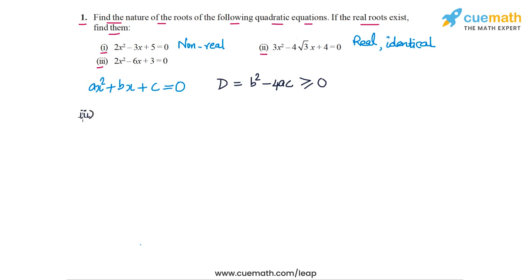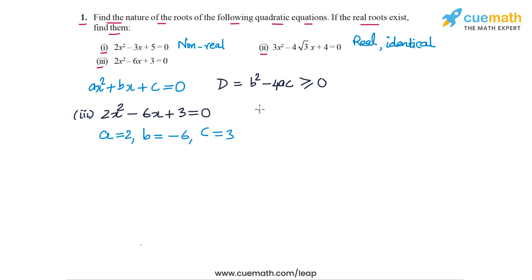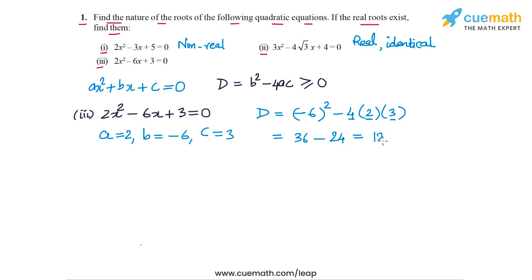Now let's go to part three. The equation is 2x² - 6x + 3 = 0. The coefficients are: a = 2, b = -6, and c = 3. The discriminant is b² - 4ac = (-6)² - 4 × 2 × 3 = 36 - 24 = 12. So the discriminant is greater than 0.